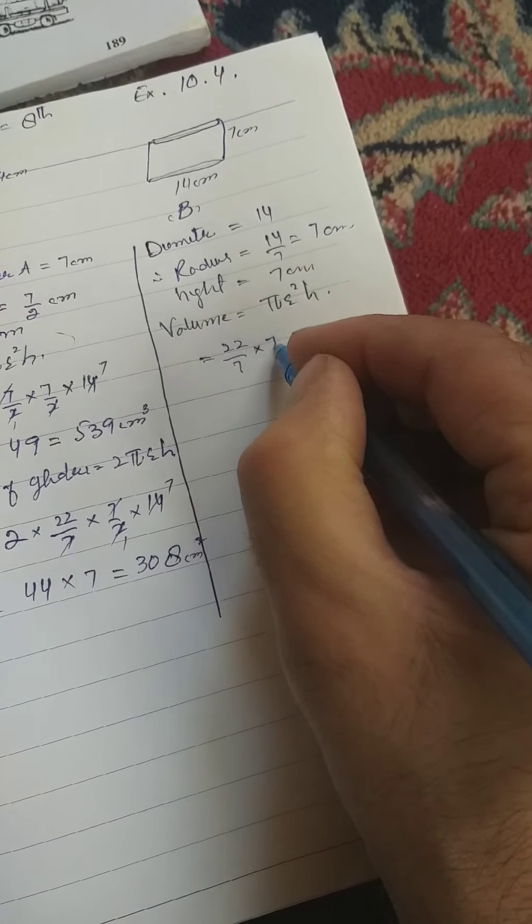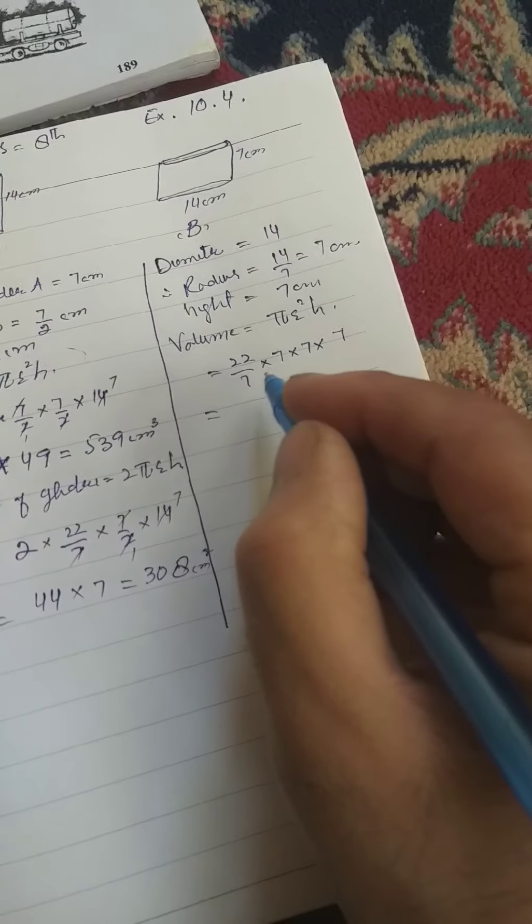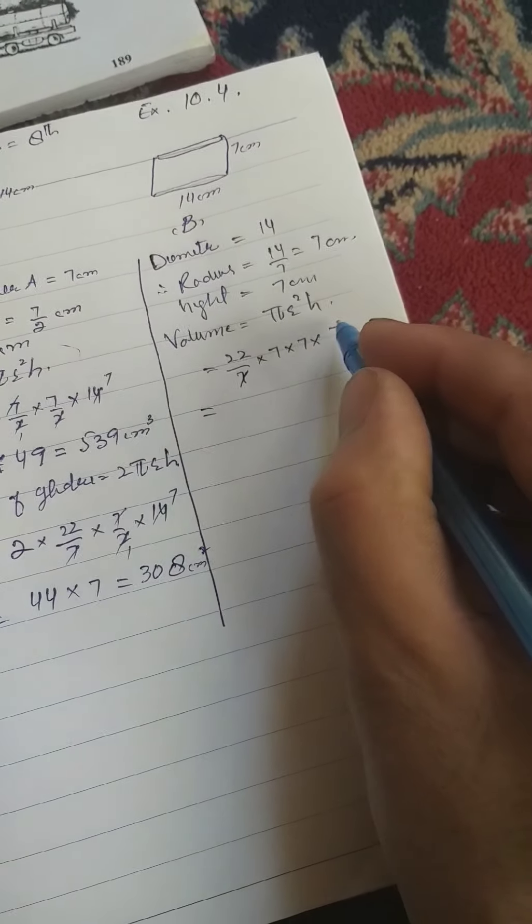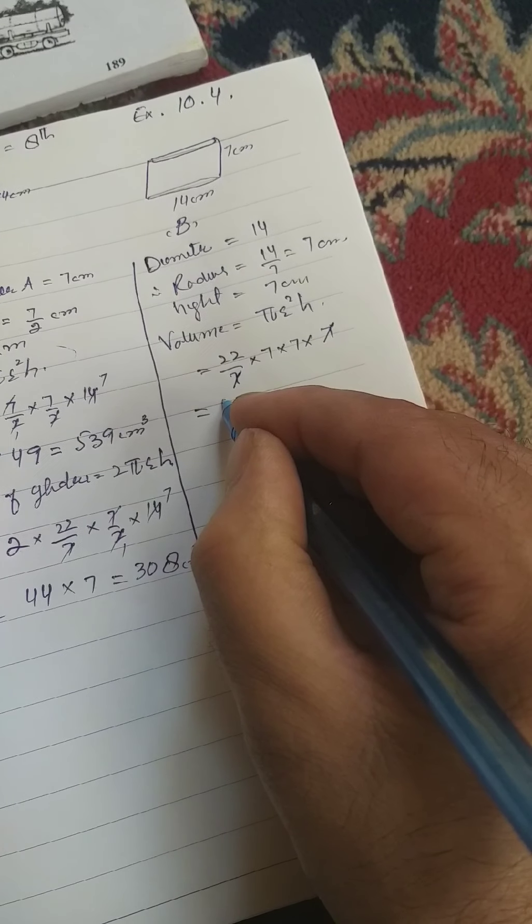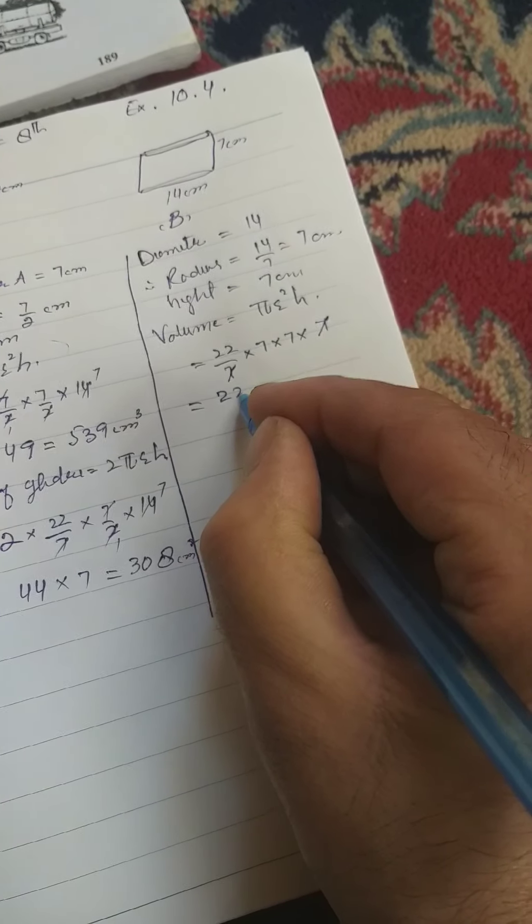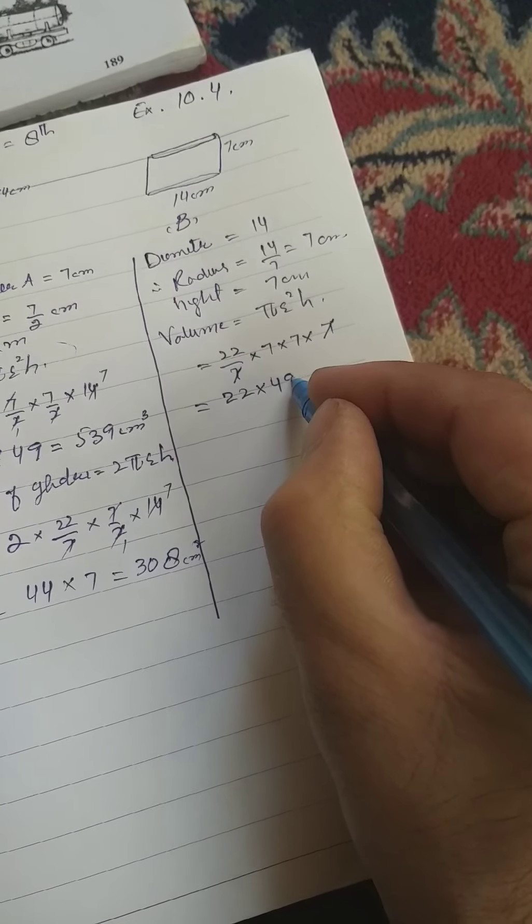Radius 7 into 7 into h is equal to 7. 7 or 7 cancel, 22 into 7, 7 is equal to 49. 49.